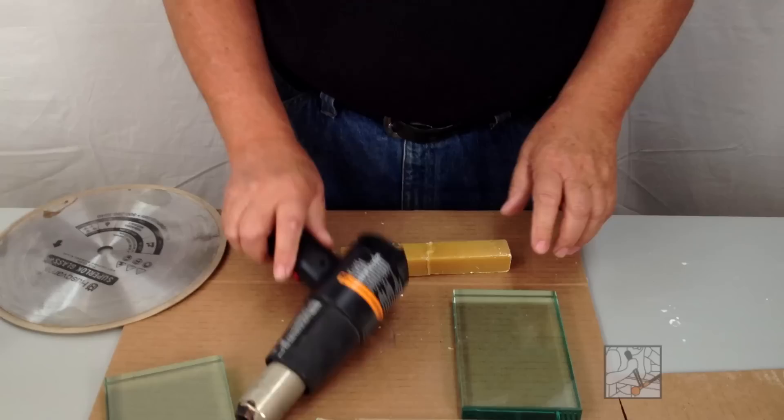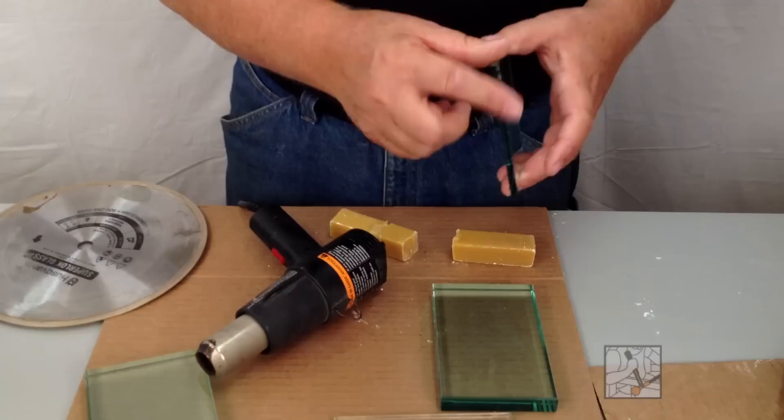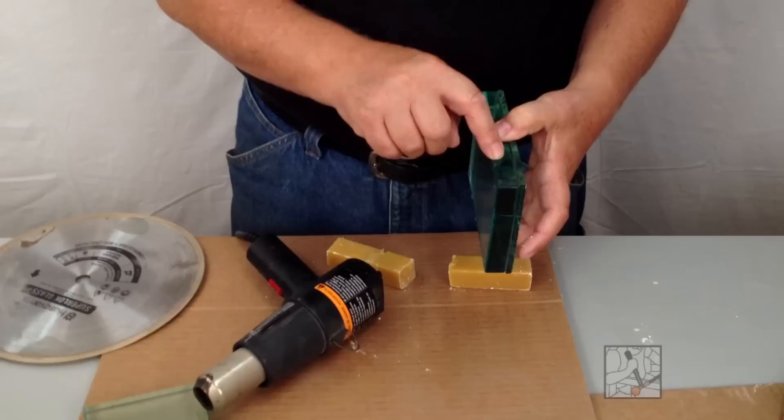We're going to use the stacking wax to basically bond, in this case, a piece of quarter-inch plate glass to the piece of glass that I want to cut and drill through with a minimum of chipping.